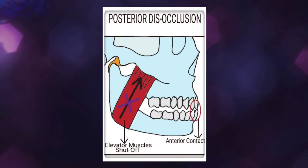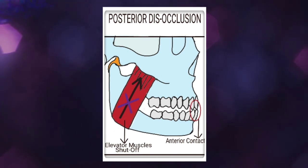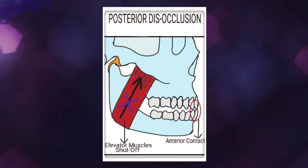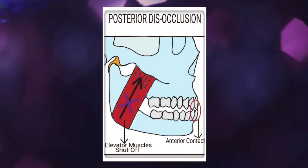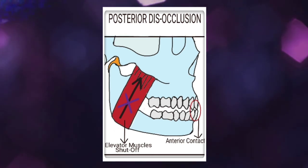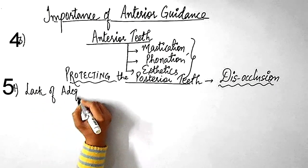Whenever a patient performs protrusive or lateral excursive movements, contacts remain only on the anterior teeth while all the posterior teeth disocclude — meaning there is separation of all the posterior teeth. This separation further results in shutting down of almost all of the elevator muscles. This is what we call posterior disclusion, and it further reduces the chances of overloading or excessive wear of the posterior teeth.